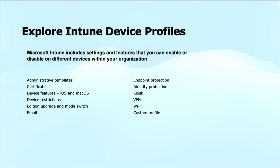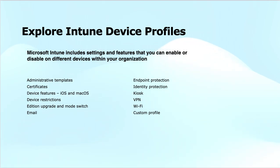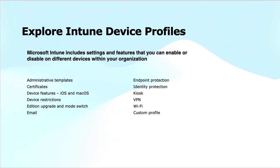Next, we have certificates that we can use to deploy and manage certificates on devices for secure communication, authentication, and access to corporate resources. Next is device features — for iOS and macOS we can configure different features like application management, security, and system-level settings. After that we have device restrictions, where we can apply policies to limit or disable device features such as the camera or application installation on corporate owned devices.